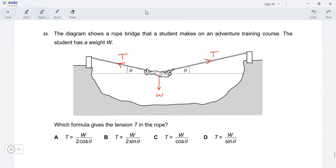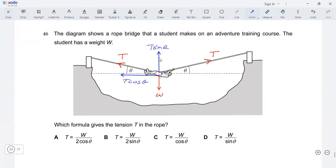Now we need to resolve the tension forces into their components, into the horizontal and vertical components. So let's do that. For this tension on the left, the two components are going to be T sine theta and T cosine theta. Very similarly for the tension to the right, you're going to have very similar components, T sine theta and T cosine theta.